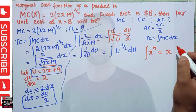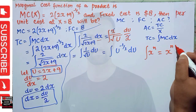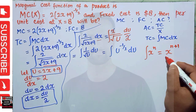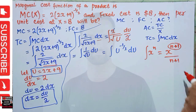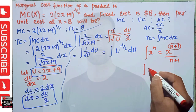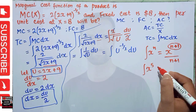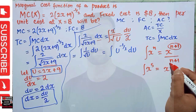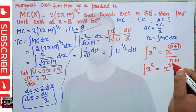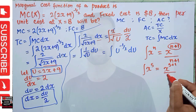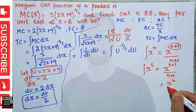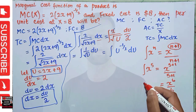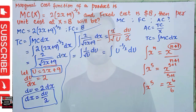Now we integrate using the power function rule: the integral of x^n is x^(n+1)/(n+1). For example, the integral of x^5 is x^(5+1)/(5+1) = x^6/6. We add 1 to the exponent and divide by the resulting exponent.